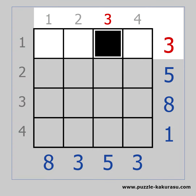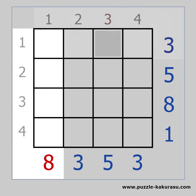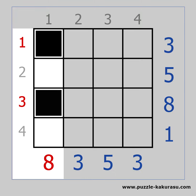The same goes for each column as well. The number at the bottom shows the sum of the black cells on that column. For example, we can make a sum of 8 by placing a black cell on the first, the third, and the fourth row. Because 1 plus 3 plus 4 equals 8.